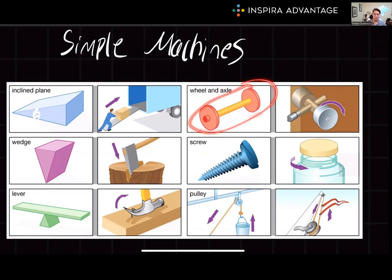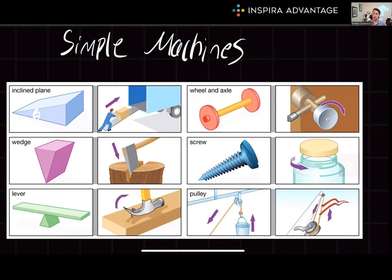Next, the wheel and axle — part of the Flintstone car. This consists of a wheel connected to a smaller axle, the orange thing in the middle. When force is applied to the larger wheel, the axle rotates, amplifying the force and increasing the distance an output force acts upon. Probably the most tested on the MCAT is the inclined plane — a flat surface angled relative to the horizontal. By moving an object up an inclined plane, the force required to lift the object vertically is reduced, while the distance over which the force must be applied is increased.